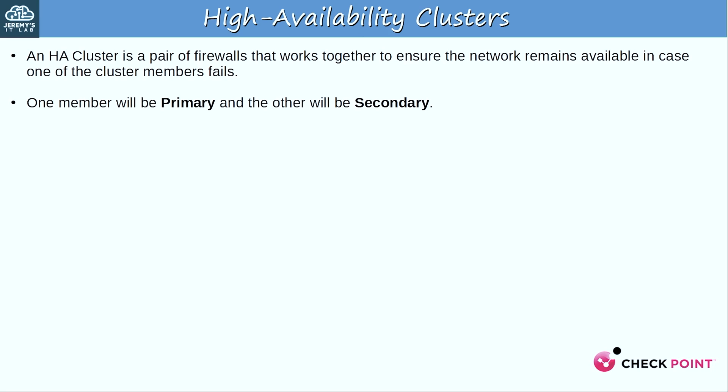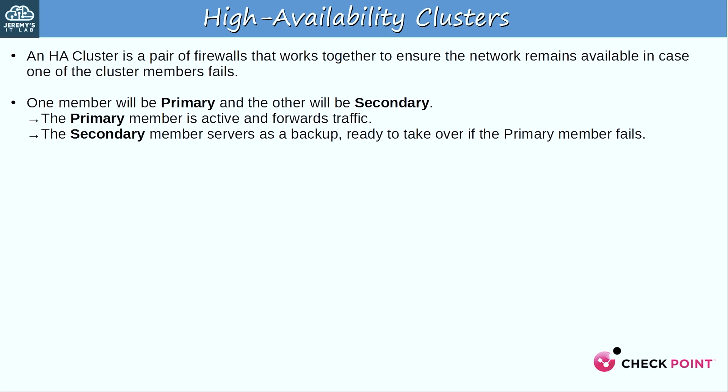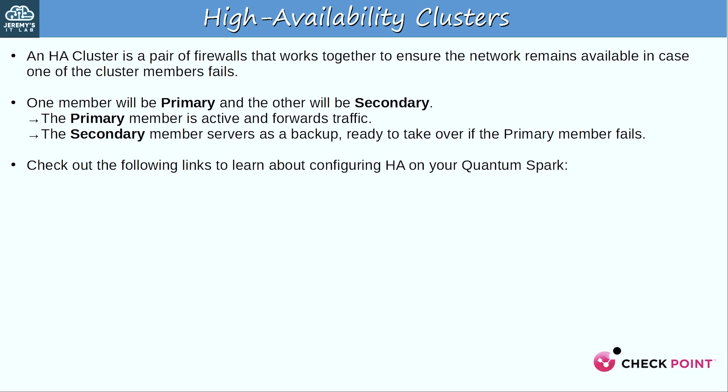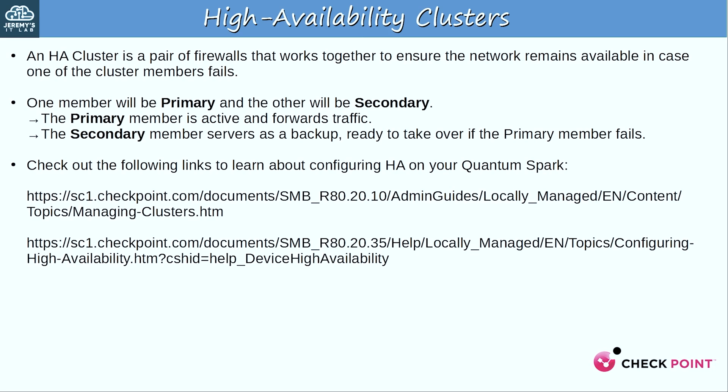One member of the cluster will be primary and the other will be secondary. The primary member is active and forwards traffic, whereas the secondary member serves as a backup, ready to take over if the primary member fails. So although the names are primary and secondary, I might refer to them as active and backup instead. If you want to learn about configuring HA on your QuantumSpark device, check out the links to documentation from Checkpoint in the description — that's the documentation I'll be referring to for this video.